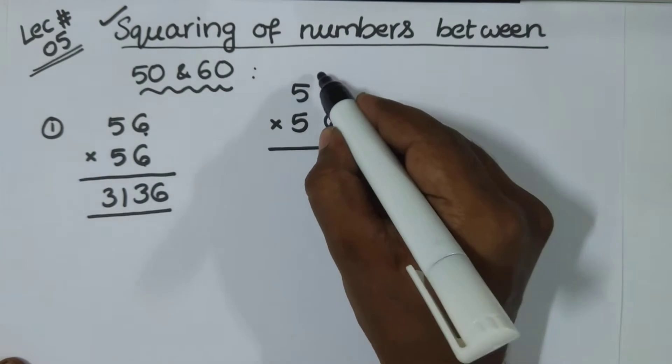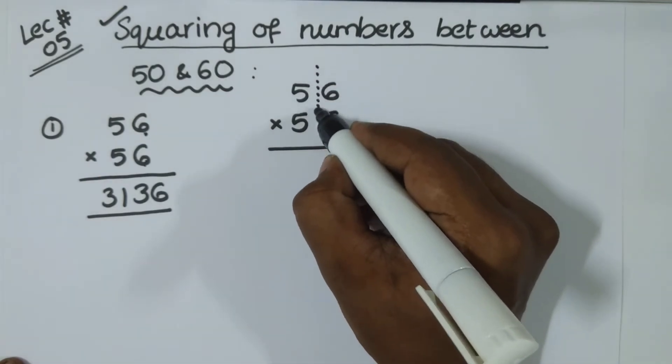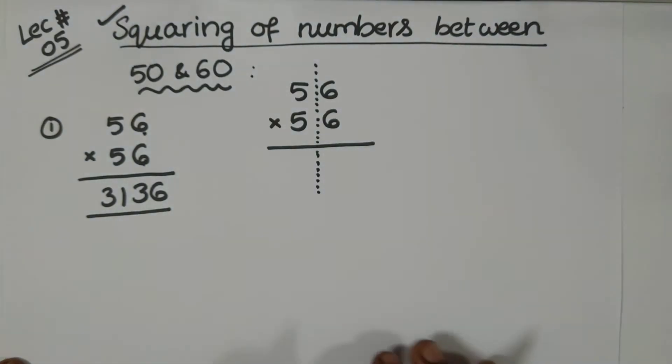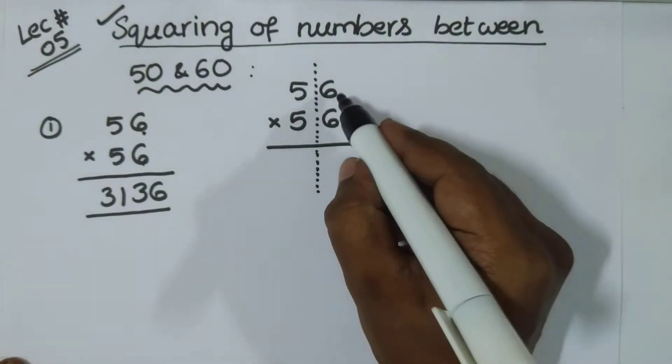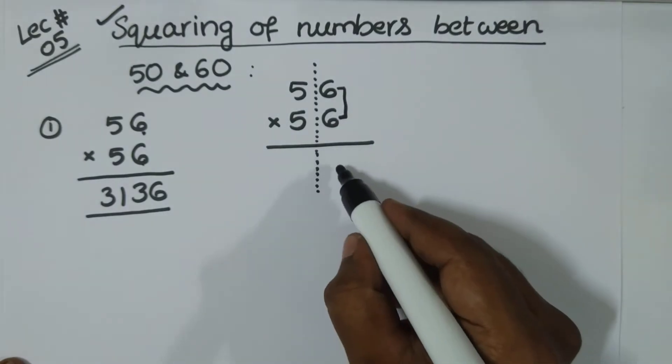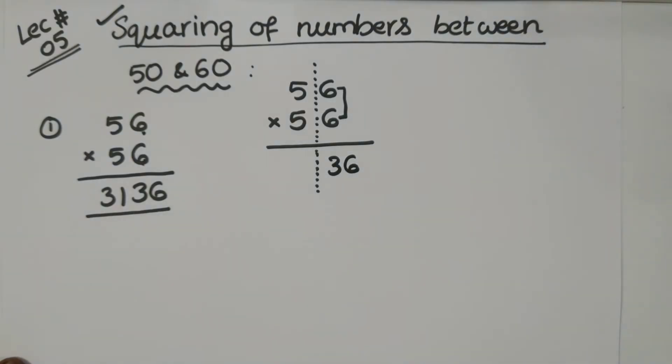Okay. Now, you segregate this. You segregate like this. You separate them this way. Now, simply multiply 6 and 6. 6, 6, 6 times 6 is 36. This part is okay.